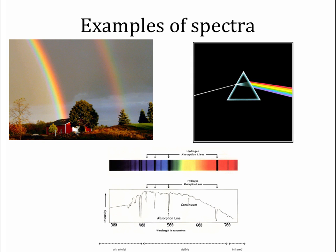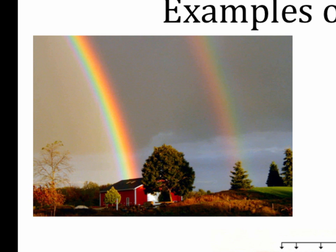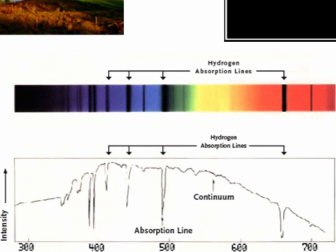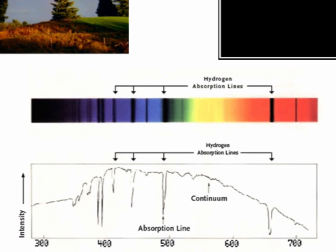Here are some examples of spectra that you may have seen before. In the top left is a double rainbow. On the right is a representation of a prism from Pink Floyd's Dark Side of the Moon. In the middle is an actual picture of a stellar spectrum. You see not only are there colors there, but there are some dark lines that we will have to explain. And underneath is a graph of that same spectrum showing how there are dips in the intensity of light corresponding to those dark lines.